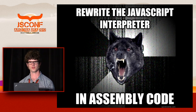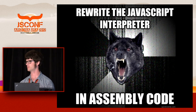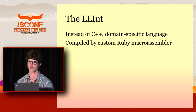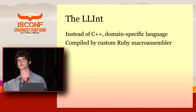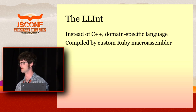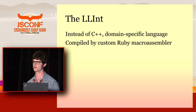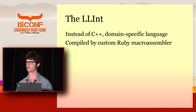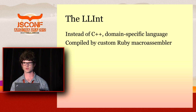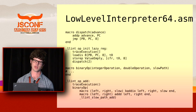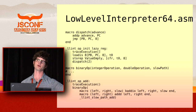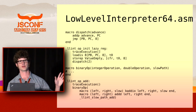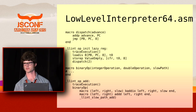What happened was, a fellow named Philip Pislow — I don't know exactly how long he's been working at Apple, but he's been contributing to JavaScript Core for about a year — rewrote the interpreter in assembly. The LLint is the new interpreter for JavaScript Core. Instead of being implemented in C++, it's implemented in a domain-specific assembly language, and it's actually compiled to native code with a custom Ruby macro assembler. So I think it's fair to say JavaScript Core is now implemented in Ruby.